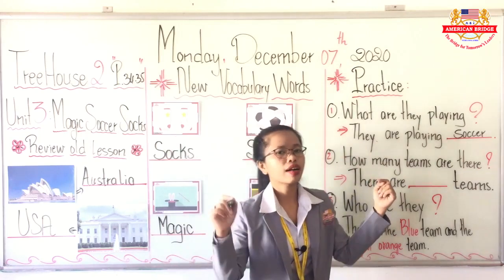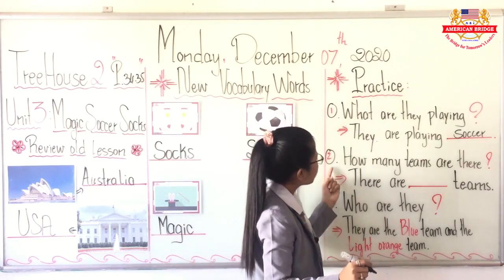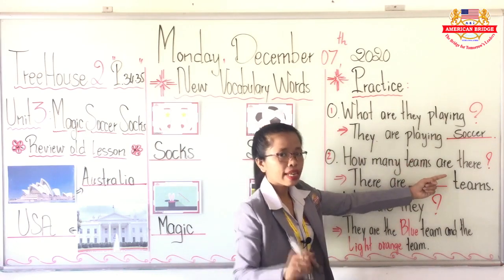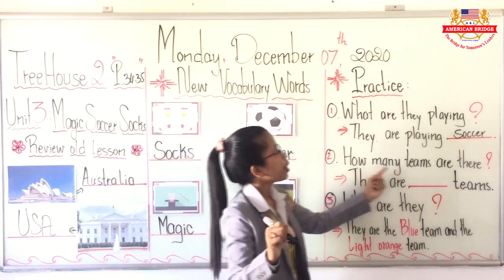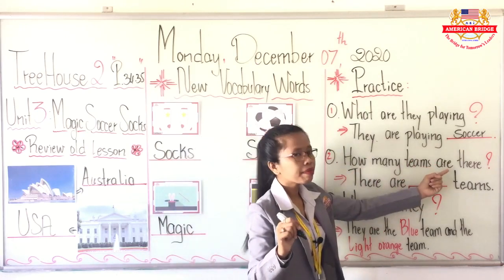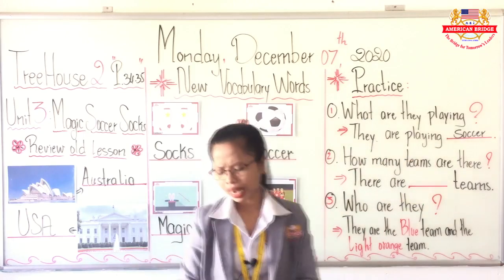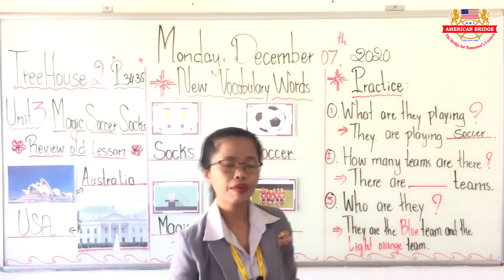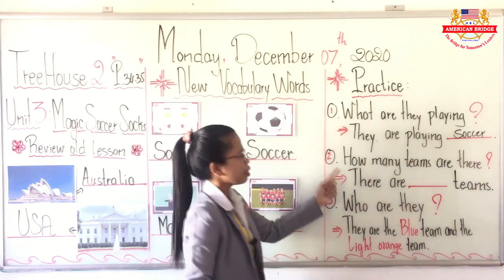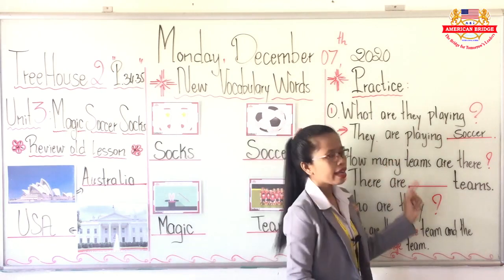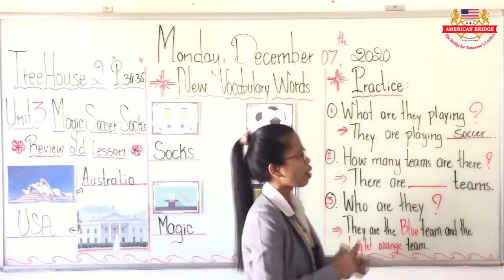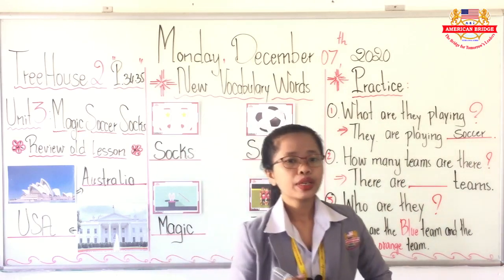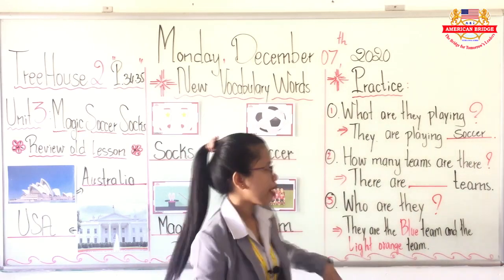The game is called soccer. The next question is number 2: how many teams are there? The answer is — how many teams are there in our story? We can see 2 teams. So the answer is: there are 2 teams. How can we spell 2? T-W-O. Excellent. We have 2 teams.